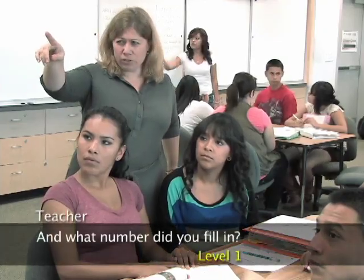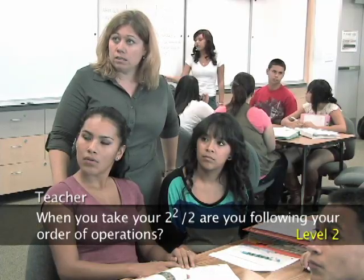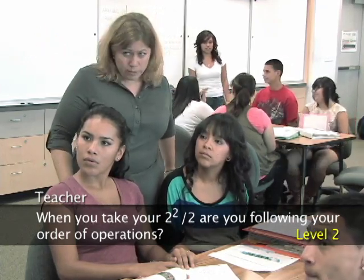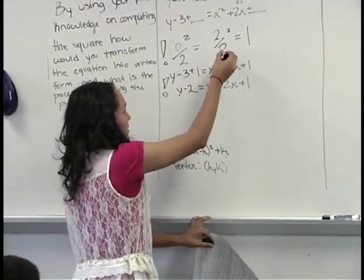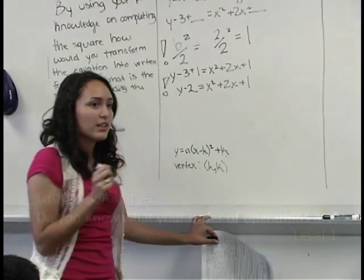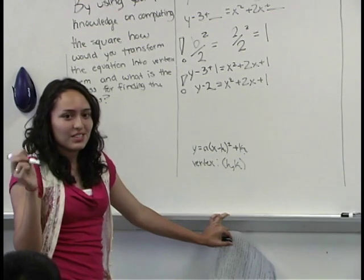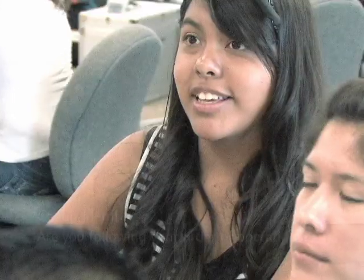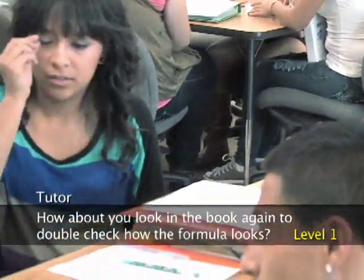Yeah, I put that. Okay. And when you take your 2 squared over 2, are you following your order of operations? Yes, because you would divide the 2 over 2 and then you square what you get. Do you know what your order of operations are? Yeah. So, are you following your order of operations? Let's see. How about you look in the book again to double check how the formula looks?